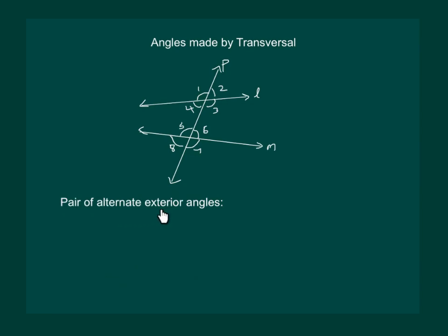Next, we have alternate exterior angles. So, angle 1 and angle 7 are alternate exterior angles. Similarly, angle 2 and angle 8 form another pair of alternate exterior angles.